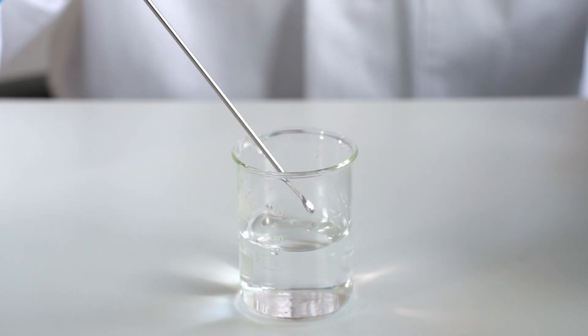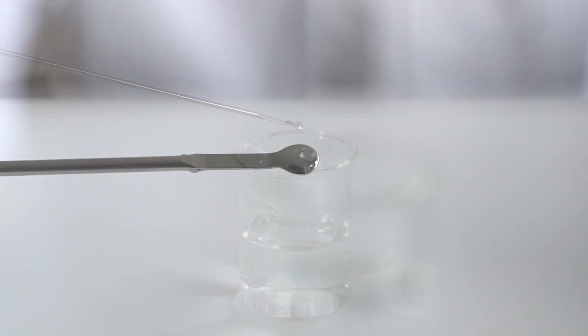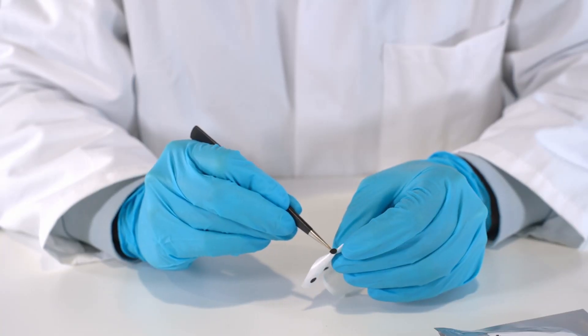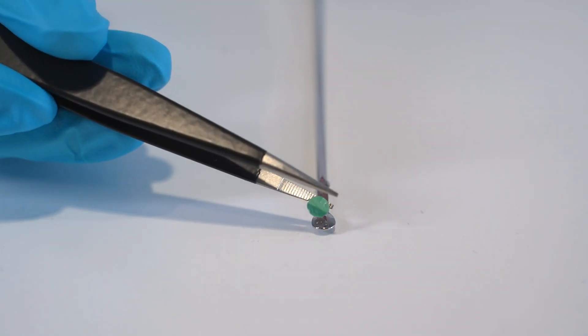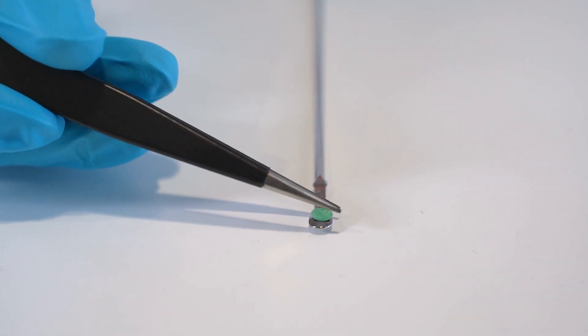Next, dip the spoon of the spatula into distilled water to wet its surface. A small water drop should remain on the back of the spoon. Carefully remove the sensor spot from the package surface and place the sensor spot on the spoon with the water drop with the green and glossy side up.